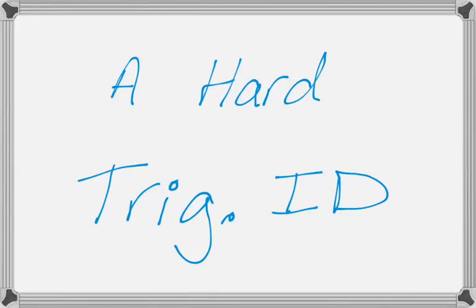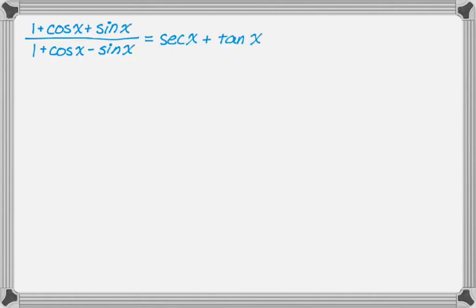Okay, in this video we're going to verify one pretty challenging trig identity, so let's take a look at it. We got 1 plus cosine x plus sine x over 1 plus cosine x minus sine x is somehow going to be equal to secant x plus tangent x, which seems unlikely, but we're going to go through and actually show that that's true.